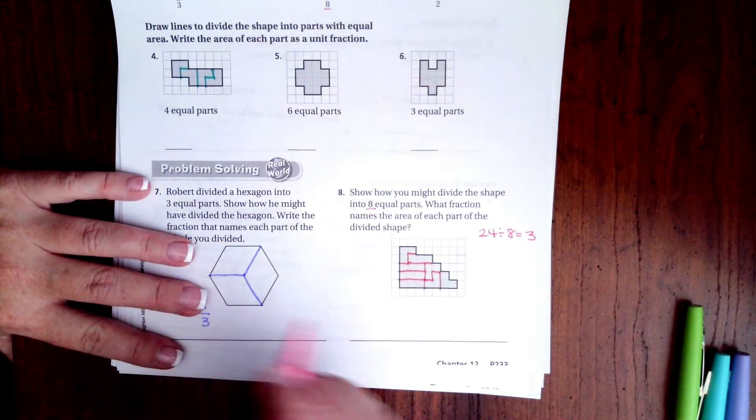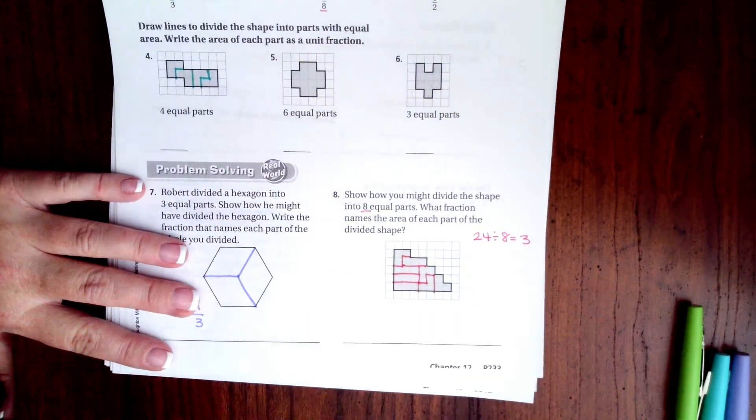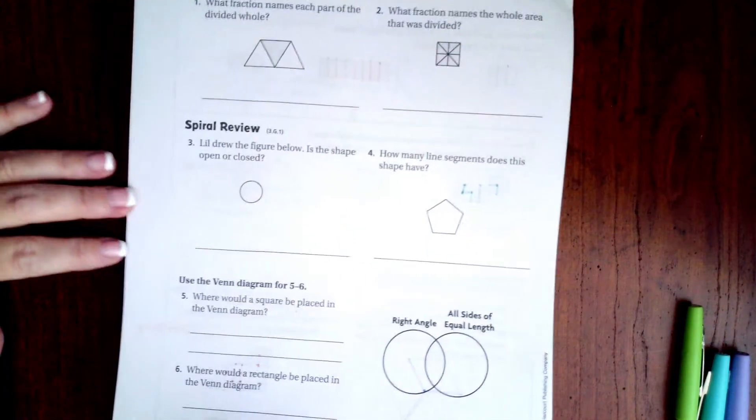Is three, so each one of these now has three boxes in it. Okay, all right guys, we're going to go over onto the back where you guys are going to do the lesson check just like always, and we're going to do the last spiral review of third grade. Let's get it done, guys.